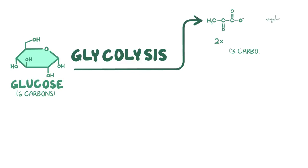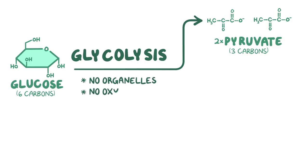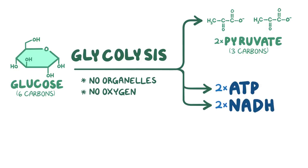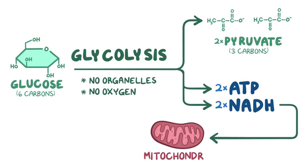As a quick recap, glycolysis breaks down a 6-carbon glucose molecule into two 3-carbon pyruvate molecules, without the use of any organelles or oxygen. Overall, there's a net production of 2 ATP and 2 NADH molecules, which in the mitochondria make roughly 3 ATPs per NADH.